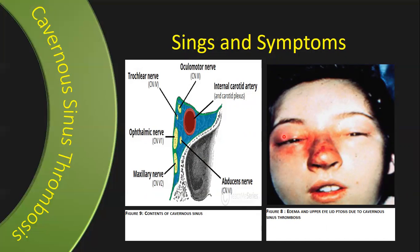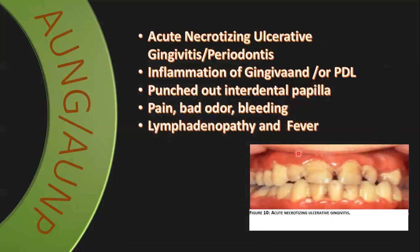Ptosis of the eyelid occurs because the swelling inside the cavernous sinus affects the oculomotor nerve, which controls the levator palpebrae superioris muscle responsible for the eyelid. If a patient presents with these clinical features, immediately send them to the hospital.